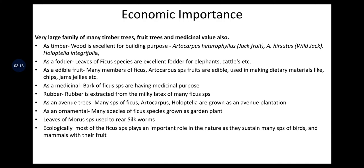Economic importance of the Moraceae family: it is a very large family of many timber trees, fruit trees, and plants with medicinal value. As timber, wood is excellent for building purposes — for example, Artocarpus heterophyllus (jackfruit), Artocarpus hirsutus (wild jack), and Holoptelea integrifolia. As fodder, leaves of Ficus species are excellent fodder for elephants, cattle, etc.